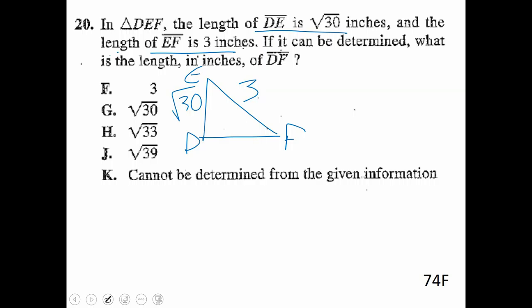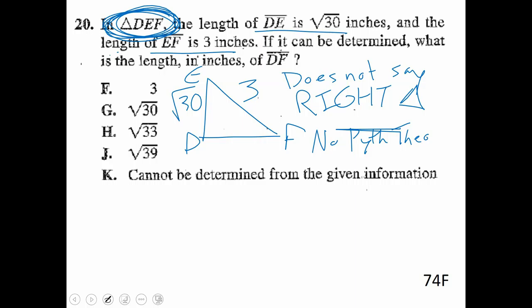Problem with that, and going back to what I said at the beginning of the lesson, is you can only use Pythagorean Theorem for right triangles. In the question, we're told triangle DEF. All right, so it does not say right triangle. So again, it does not say right triangle.